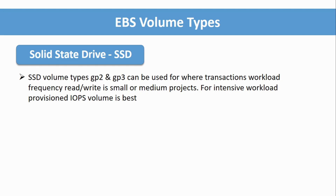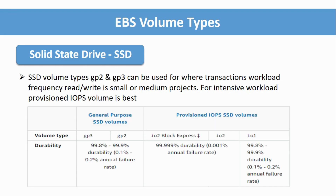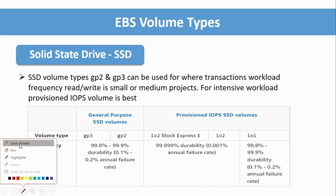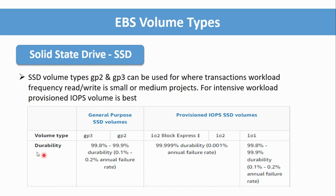For intensive workloads, there is one more type: Provisioned IOPS volume. When creating an EC2 instance, in the storage options, you can select GP2, GP3, or Provisioned IOPS, where you need more IOPS — more read/write operations. For example, if you are running EC2-based database servers where higher IOPS is expected, you can use this kind of volume.